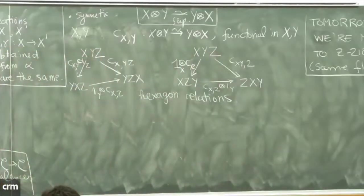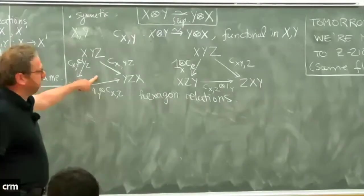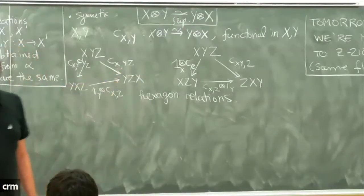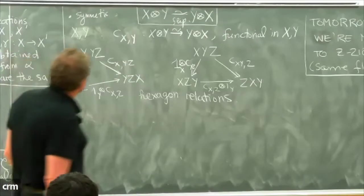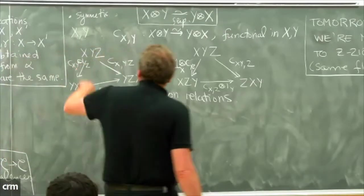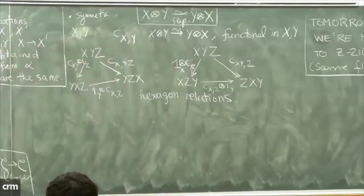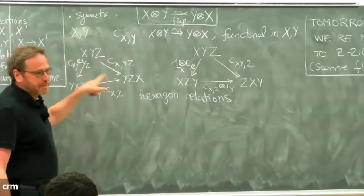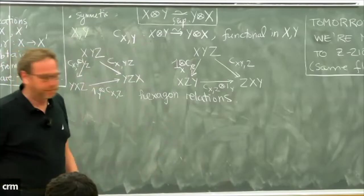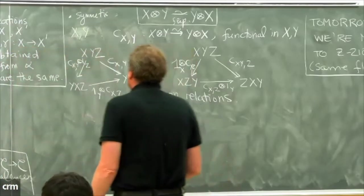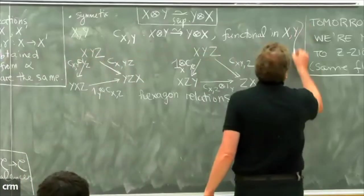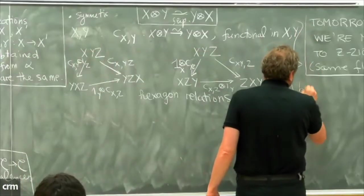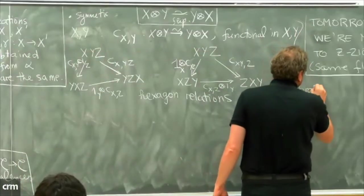Someone might ask why these are called hexagon relations when the diagrams look like triangles. If you write them out completely with the α brackets included, each diagram will also have three alphas and you will get a hexagon.